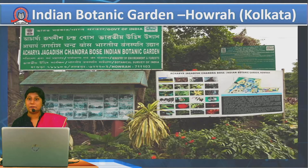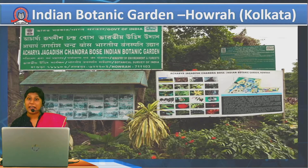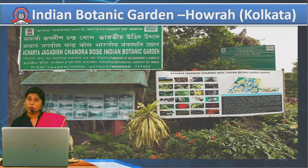So, what have we seen? Botanical gardens are specialized gardens where we scientifically grow plants using the in-vivo method — meaning in natural conditions, without any tissue culture. Plants here are well labelled with scientific names, common names, and family information. We have seen two examples: the world's largest — Royal Botanical Garden in Kew, England, and India's largest — Indian Botanic Garden in Howrah, Kolkata.